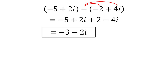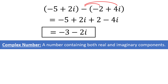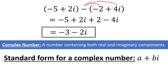We call this a complex number as there is both a real part, the negative 3, and an imaginary part, the negative 2i. Generally we express complex numbers in the form a plus bi, where a is the real number and bi is the imaginary part. In our case, a equals negative 3 and b equals negative 2. This is what we call the standard form of a complex number.